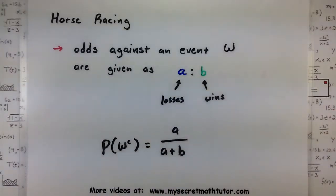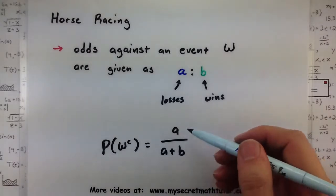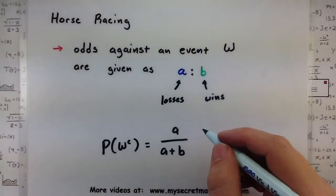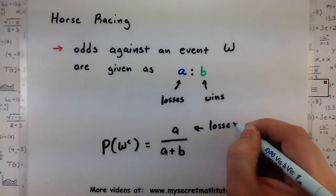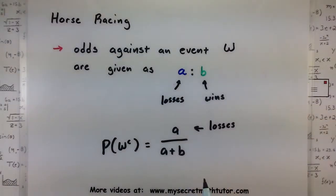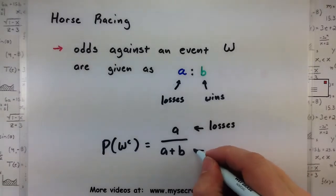Now, the reason why this probability works out has to do with the variables we're using here. Our losses are up on top. And on the bottom, since we're adding the losses to the wins, this is our total.